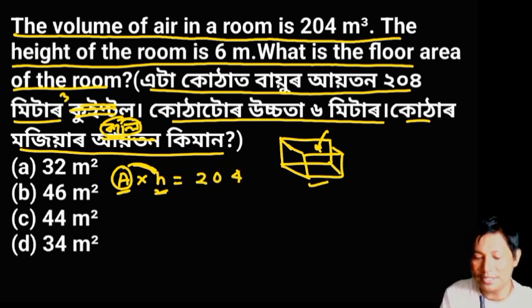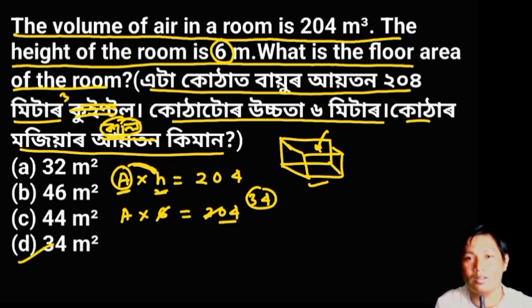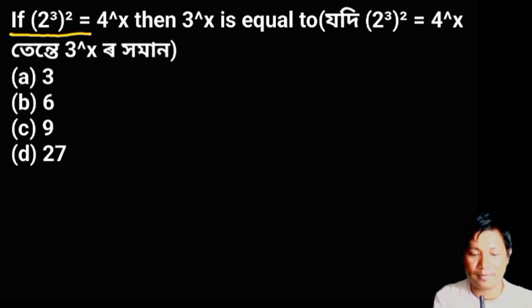If (2³)² = 4^x, then 3^x is equal to what? We need to find the value of x first by solving this exponential equation.